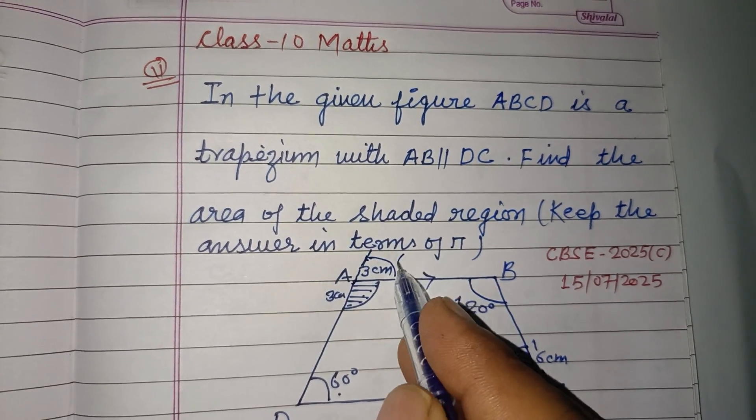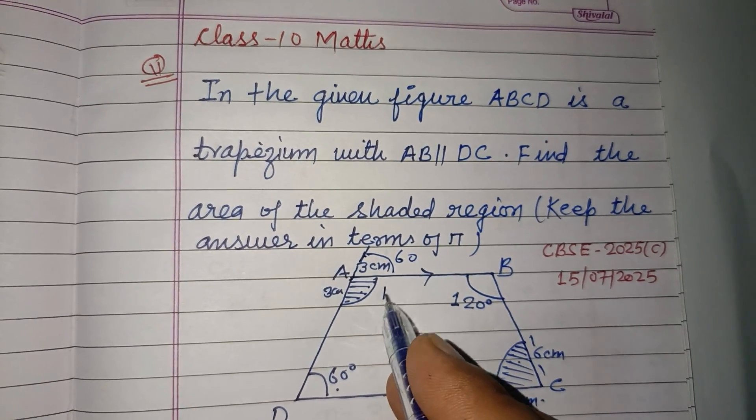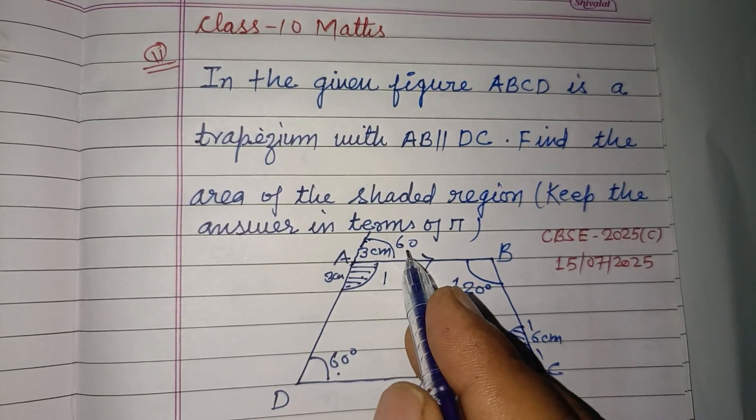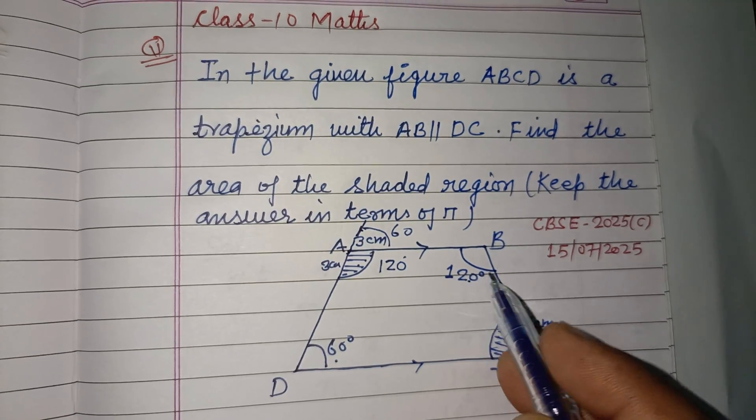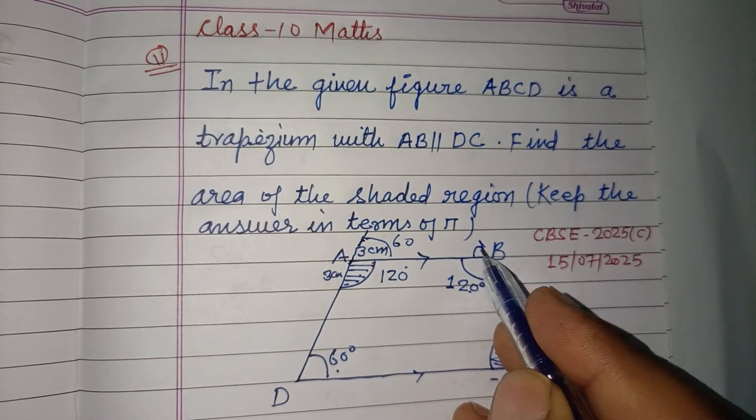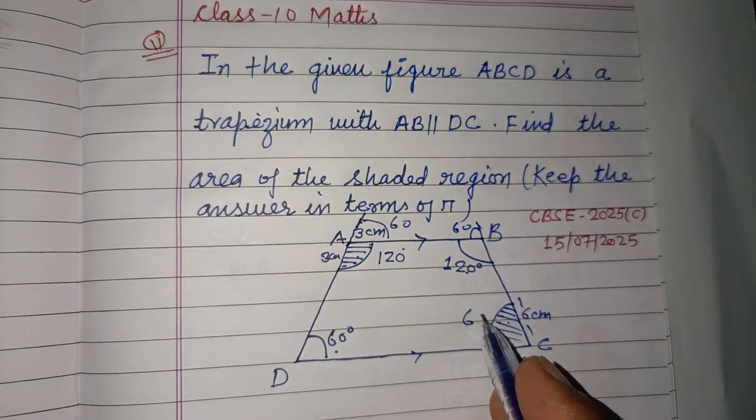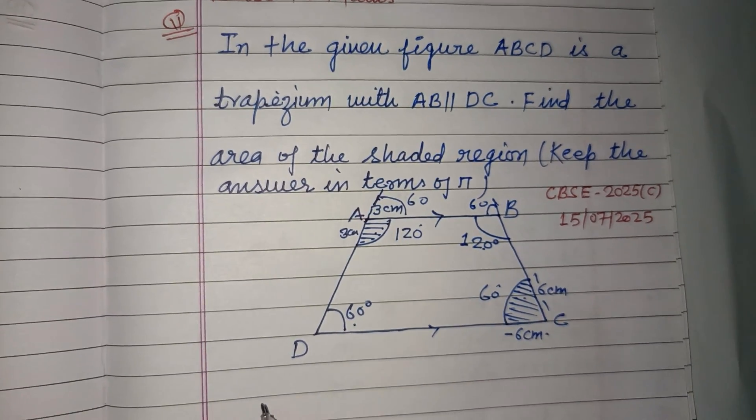Okay, and this is 60°, so this becomes 180° minus 60°, that is 120°. And if this is 120°, then this becomes 60° and this is also 60°.